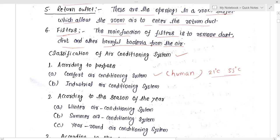The second classification according to purpose is the industrial air conditioning system. In industrial air conditioning, we require some special conditions — for example, an exact temperature like 15 degree centigrade and a specific relative humidity of 70 percent. We will discuss that in detail further.